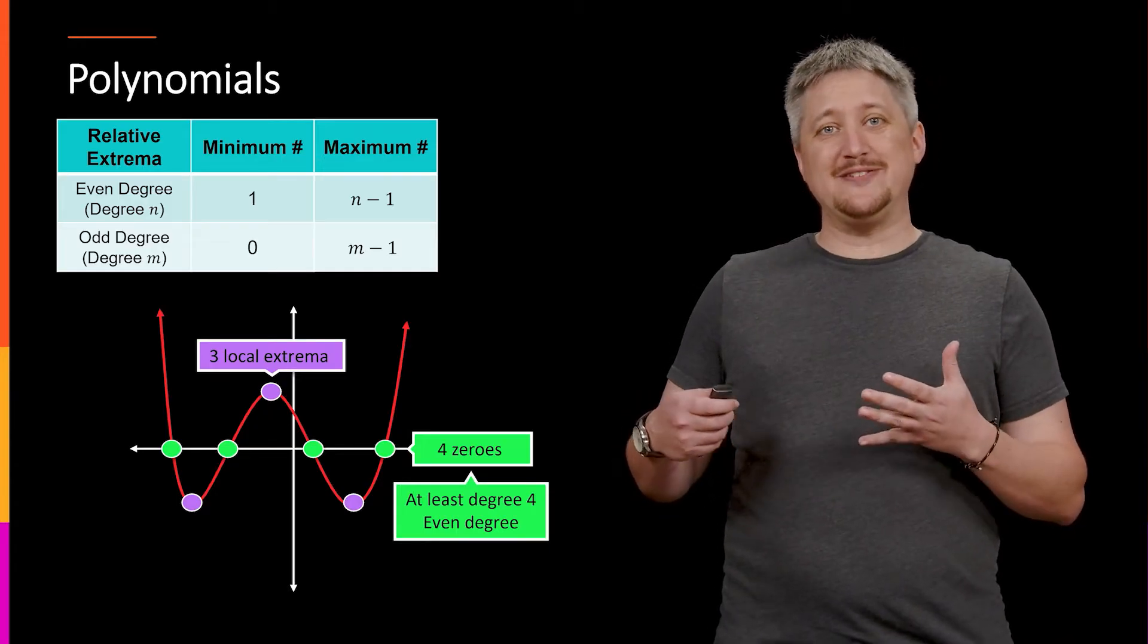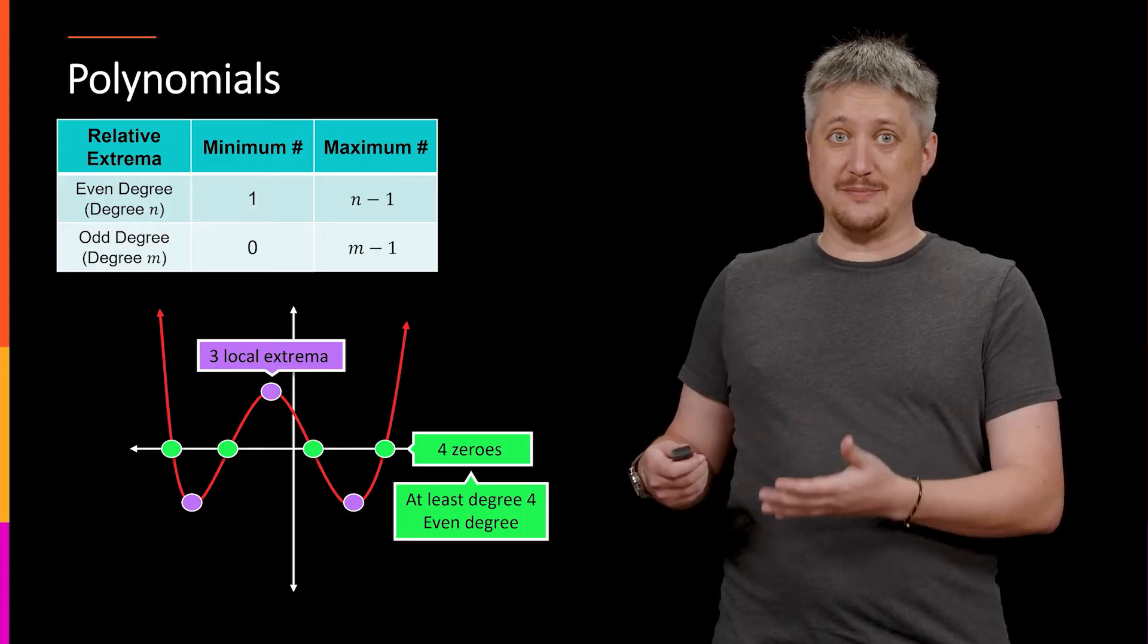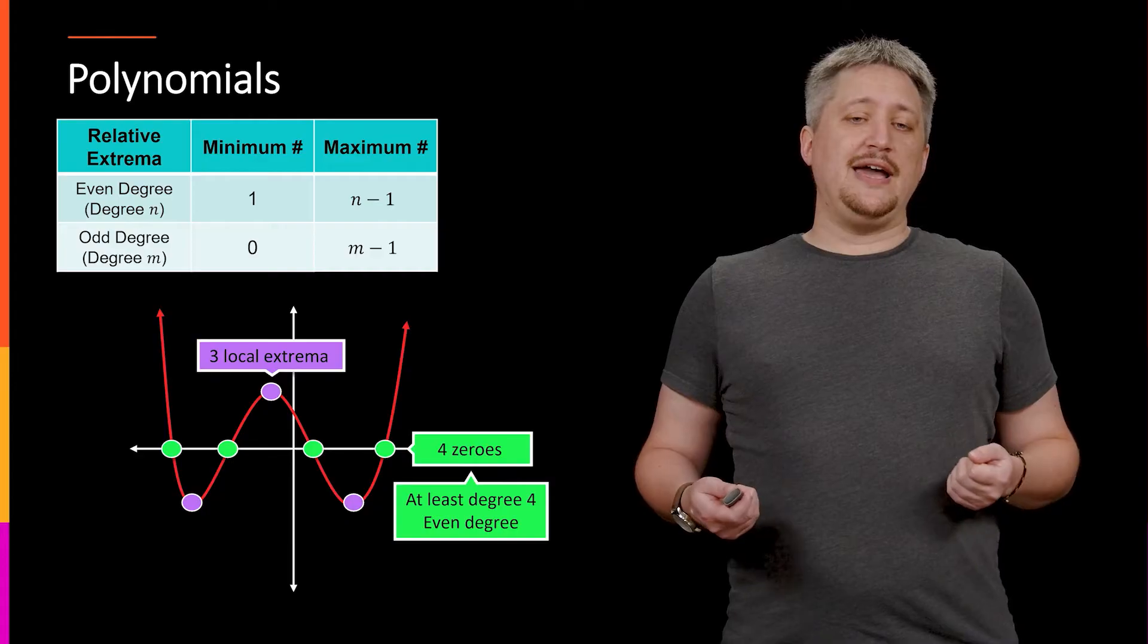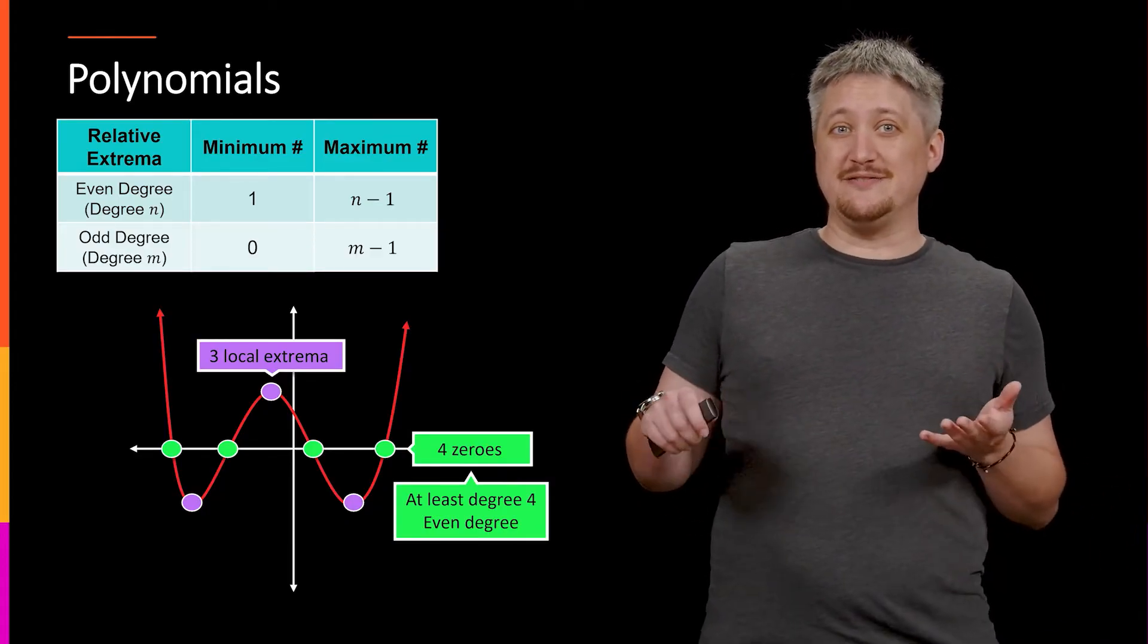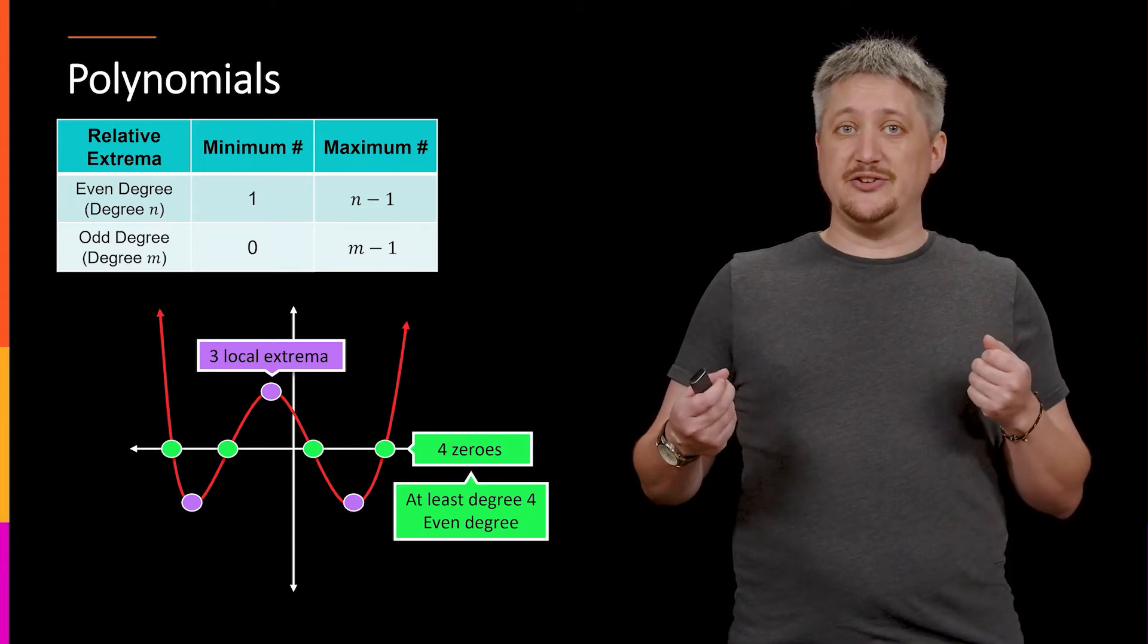So we have basically a minimum, like a lower bound, how many is the least amount we could have, which with even degree is one, with odd degree it's zero. And we have this sort of maximum or ceiling number on how many of these local extrema we have, which is the degree minus one.